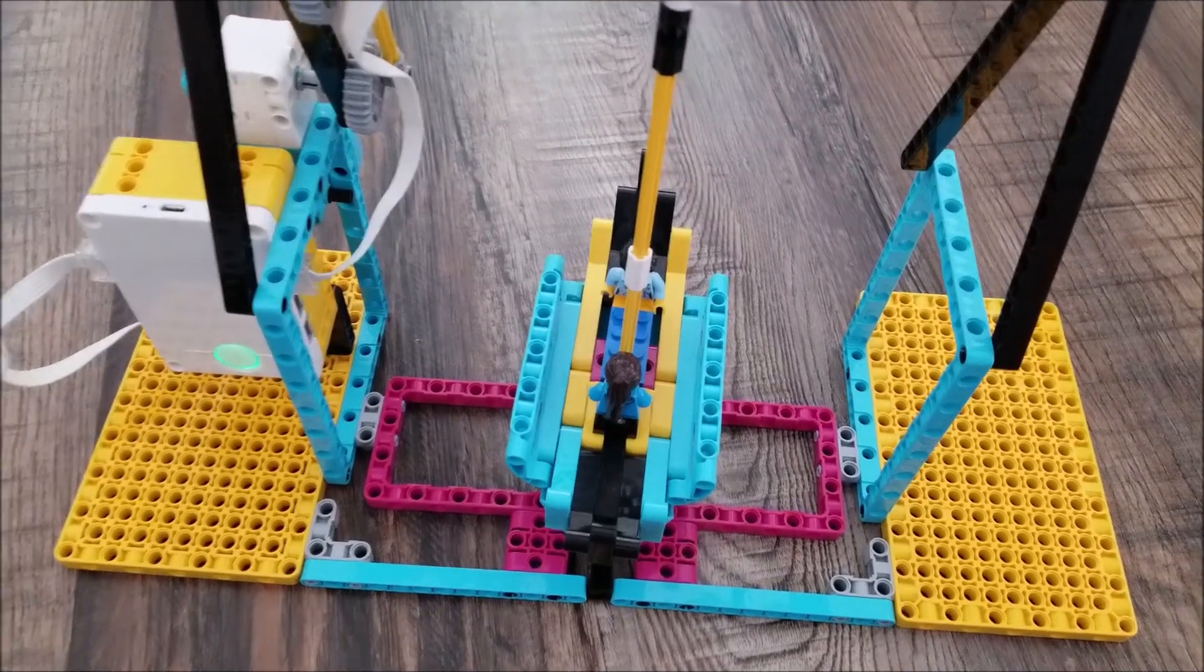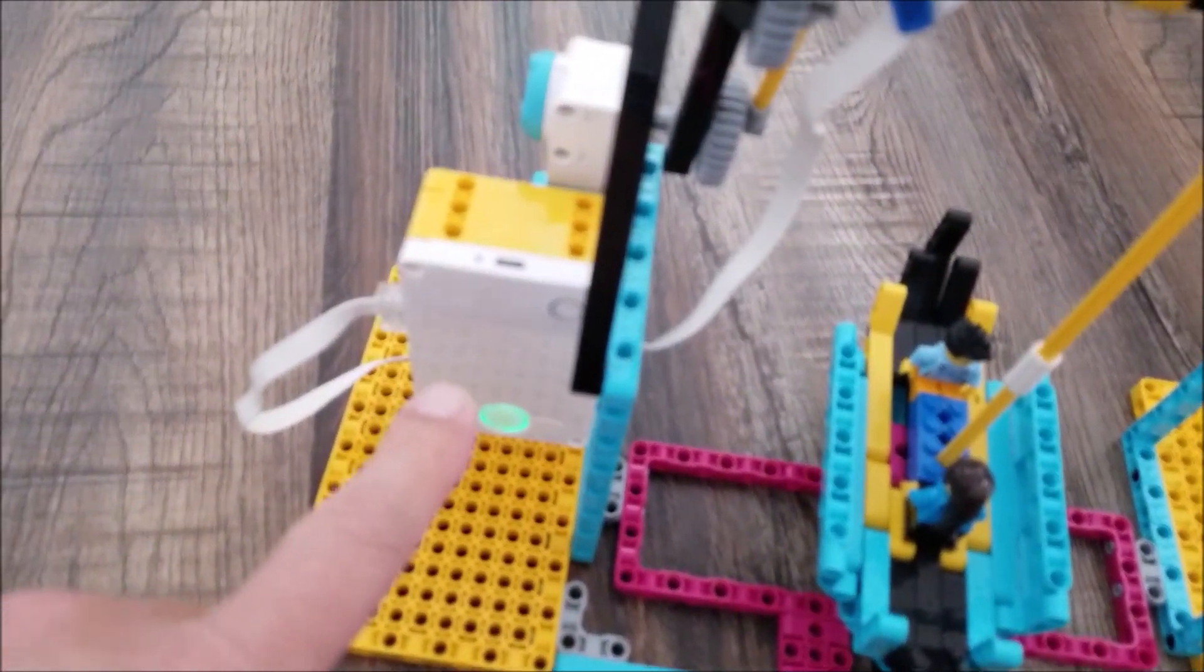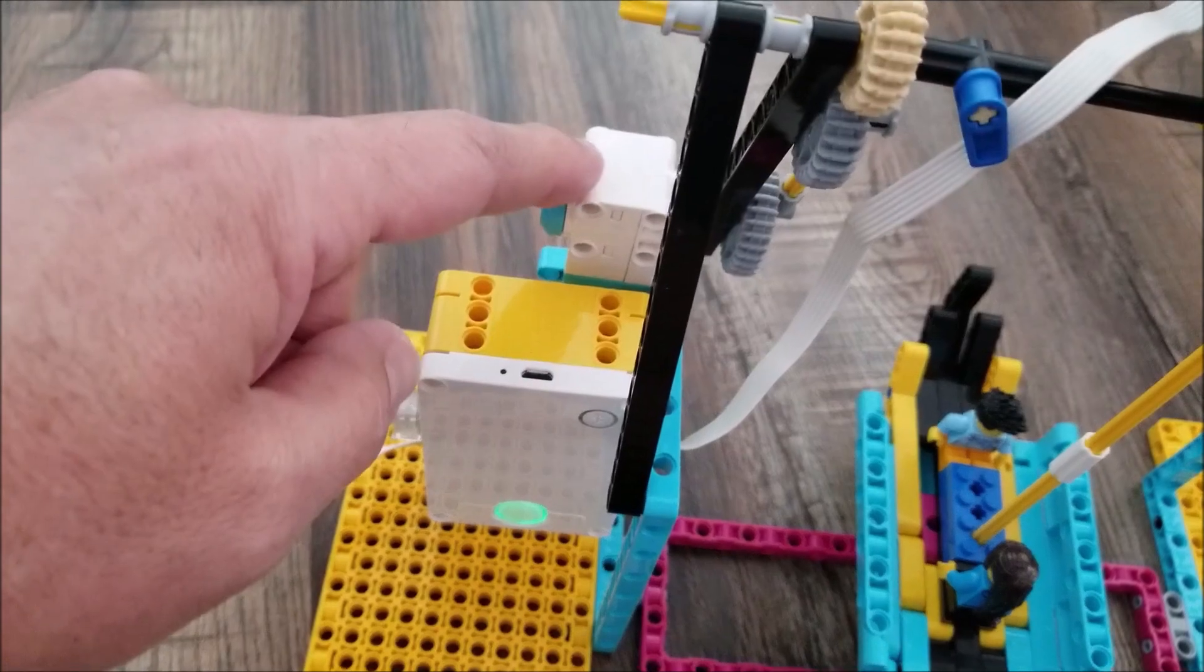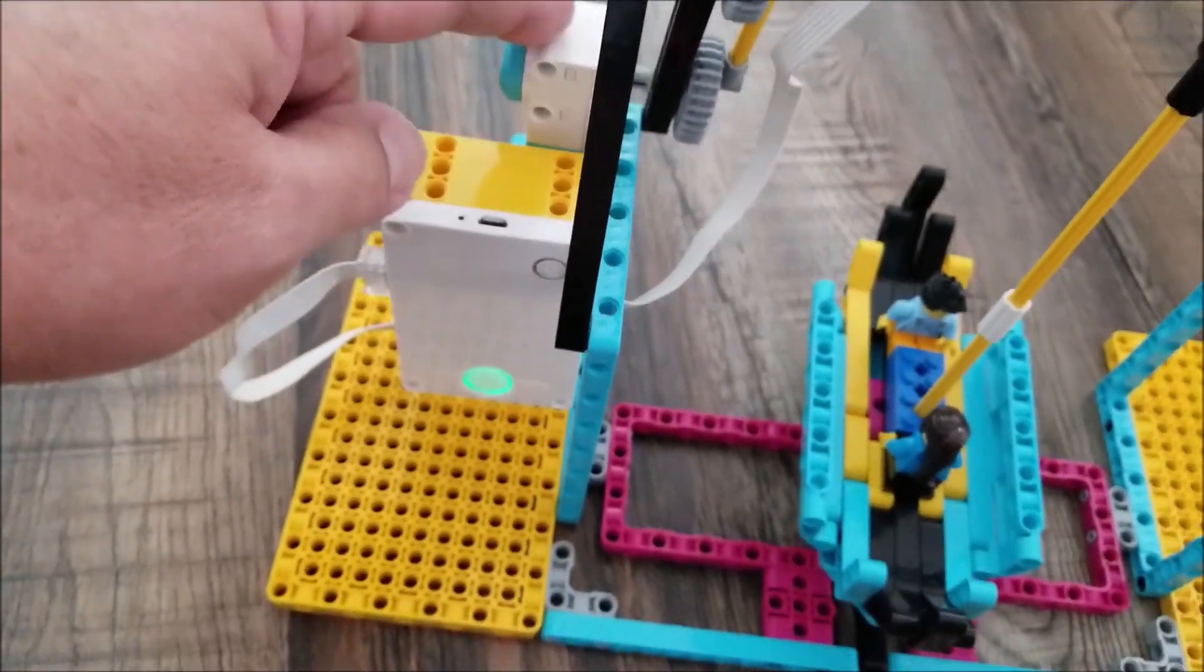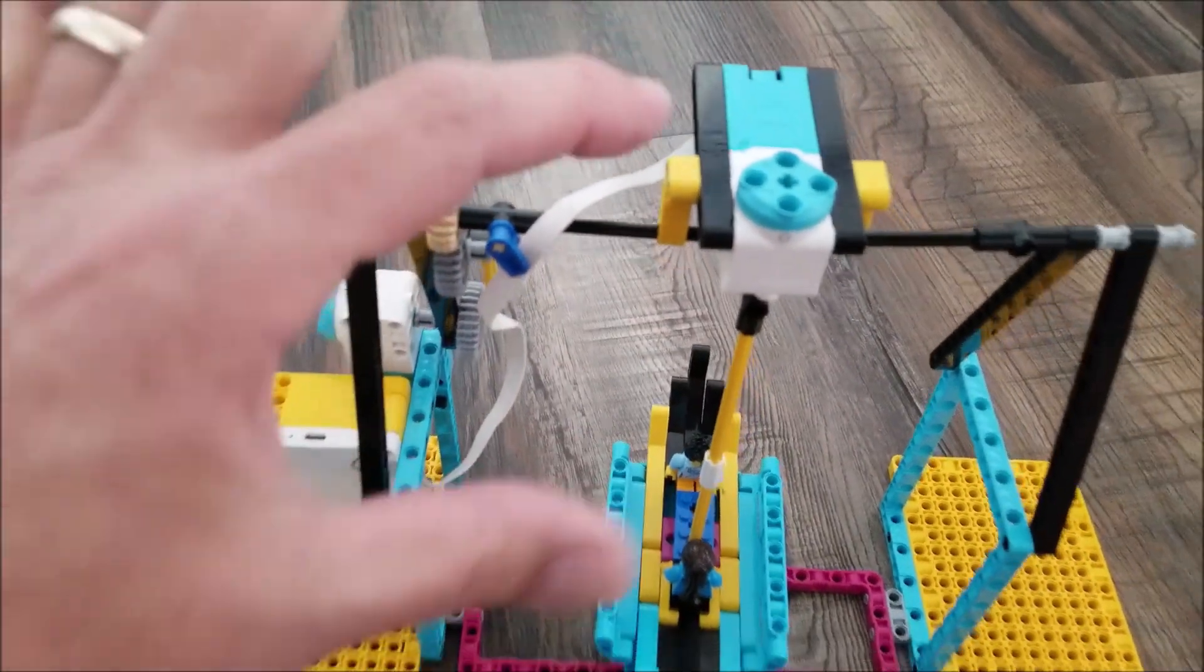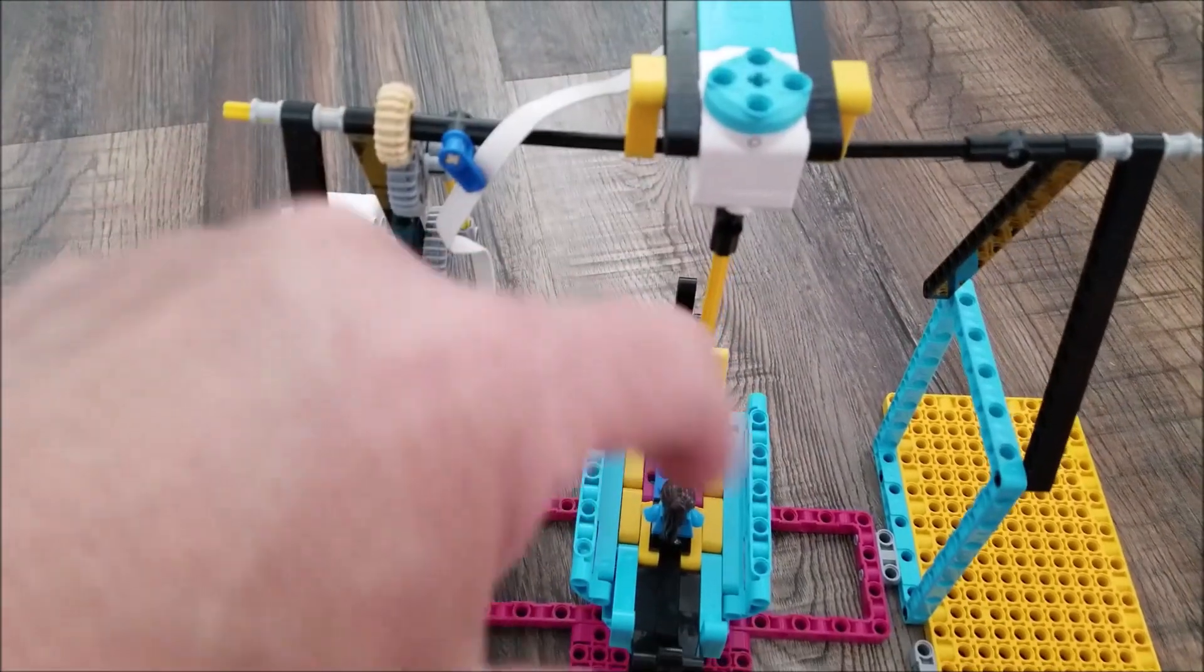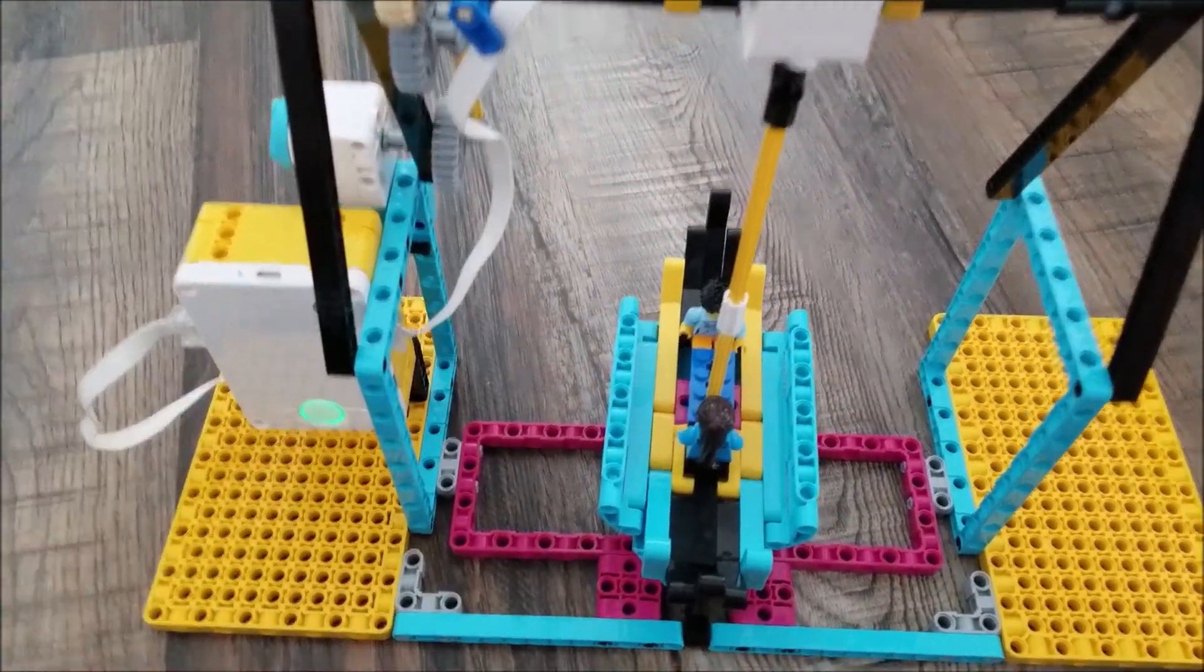All right, let's go ahead and take a look at the Pirate Ship Ride here. So we got the hub here. We got one of the motors here that is going to activate the gears here to make this thing swing back and forth. And this motor here is going to activate the twisting part.